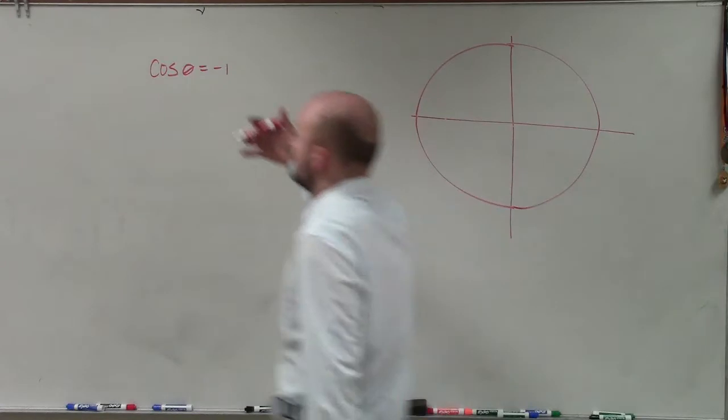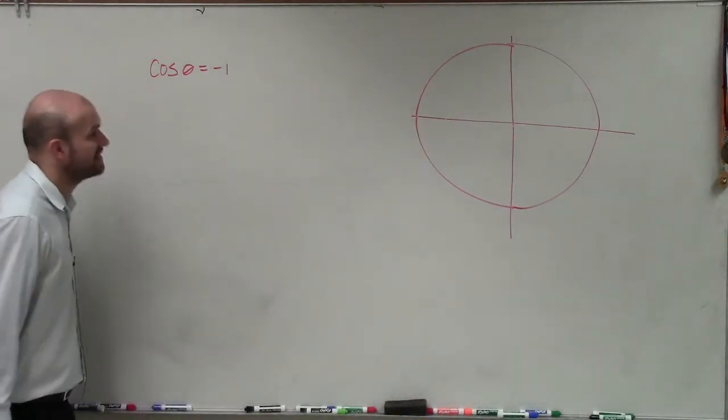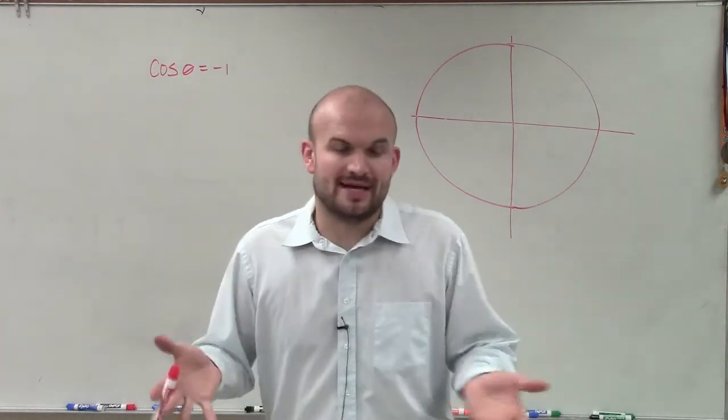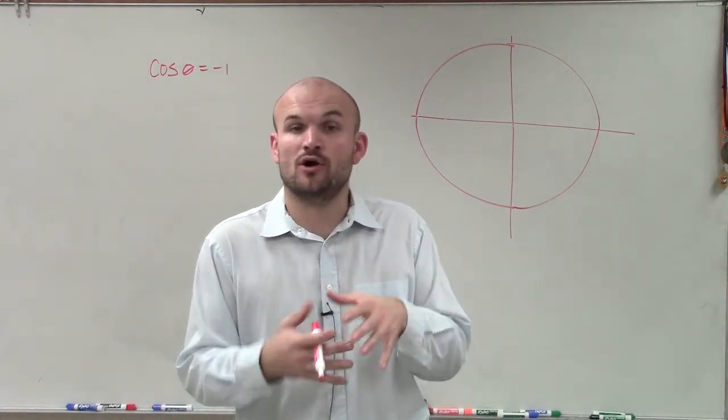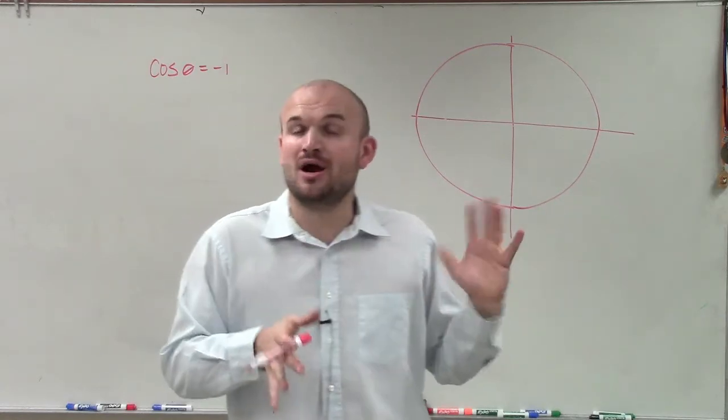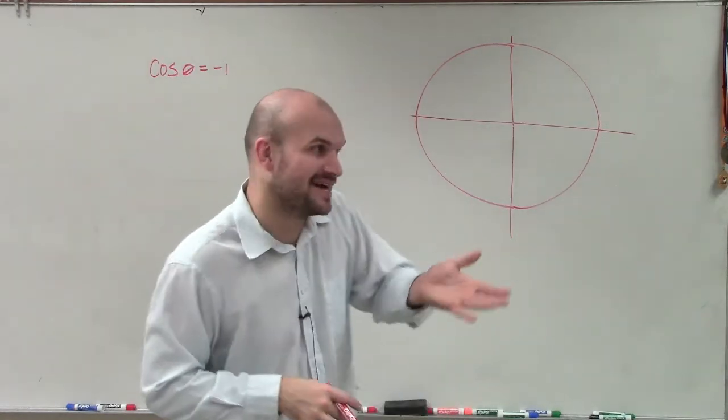So what I like to do in this example is show you how to evaluate for the cosine of theta equals negative 1. What we're trying to do is find the angle when cosine is equal to negative 1, or when the x-coordinate of the point where our angle intersects the unit circle is negative 1.